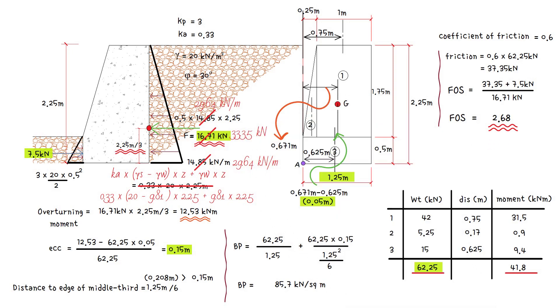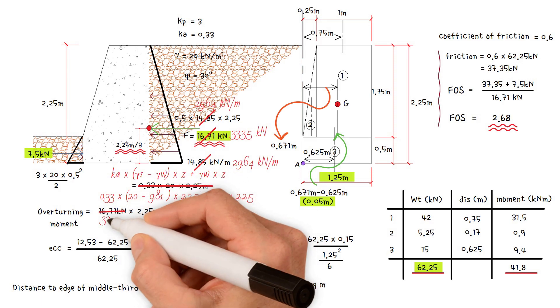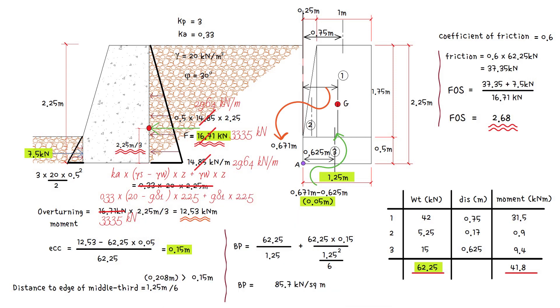This results in a value of 33.35 kilonewtons. Therefore, the overturning moment equals the resultant force 33.35 kilonewtons times height 2.25 meters divided by 3.